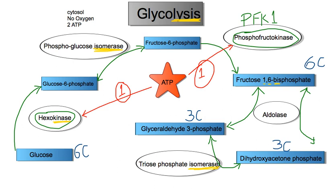Before I end this video, I want to give you two questions. First: imagine there is a mutation in the enzyme triose phosphate isomerase — what do you think will happen to the glycolysis process? Second: imagine we increase the concentration of ATP during the conversion of fructose-6-phosphate to fructose-1,6-bisphosphate — what do you think will happen? Please write your answers in the comment section below, and I'll see you in part two.